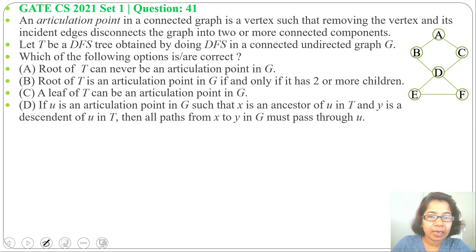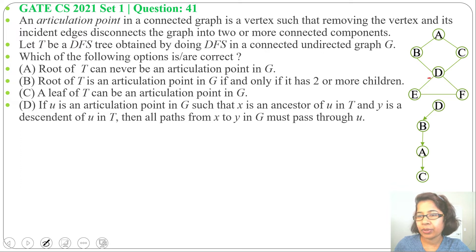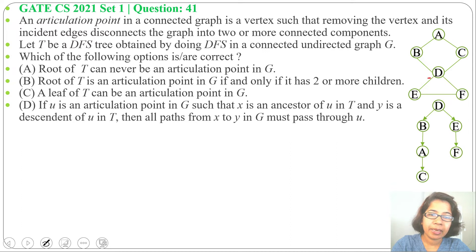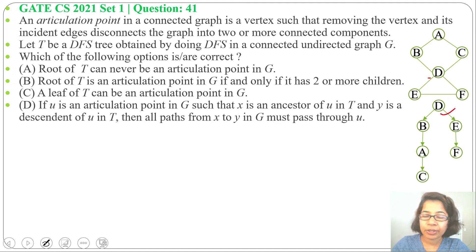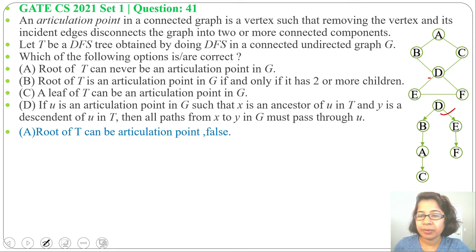Option A: root of T can never be an articulation point in G. Let me try to do DFS starting from the articulation point D. From D we can visit B, then from B we can visit A, from A we can visit C — this is a dead end so we backtrack. From D we visit E, then from E we visit F. So we made a DFS tree starting from the articulation point D, which means option A is false.